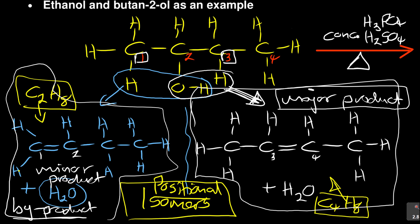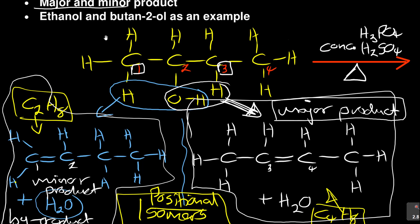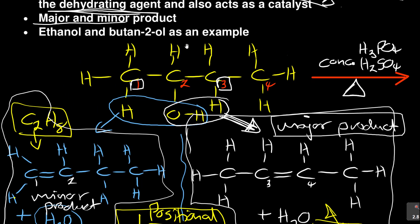Think about this: during COVID, people were making their own alcohols at home. You heard warnings that some people were being poisoned. That's because when you try to form ethanol, minor products also form — isomers of ethanol that can be dangerous. One isomer can cure cancer and another can actually cause cancer. That's how dangerous a byproduct can be — it needs to be removed from the main product.